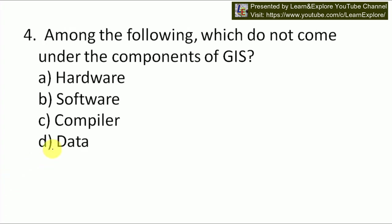Next question: among the following, which does not come under the components of GIS? GIS has many components such as hardware, software, user, and data — basically four components. Here, user is missing and in its place GIS compiler is given. Compiler is not a component of GIS, so our answer will be C. The fourth component of GIS is user — we have to keep that in mind.